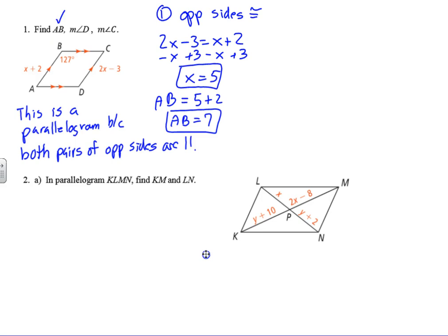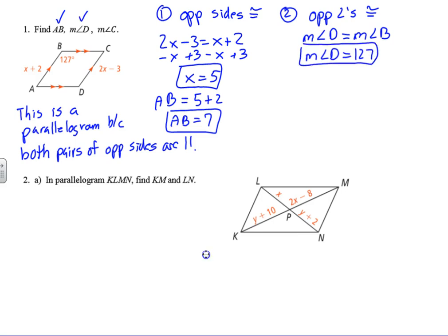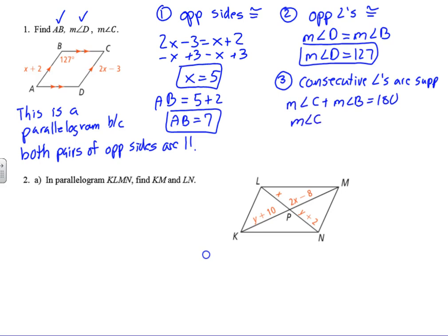Now we need the measure of angle D. Opposite angles are congruent, so the measure of angle D equals the measure of angle B. We know angle B is 127 degrees, so the measure of angle D equals 127 degrees. Now for angle C — consecutive angles are supplementary, so the measure of angle C plus the measure of angle B equals 180. The measure of angle C plus 127 equals 180, so the measure of angle C equals 53 degrees.